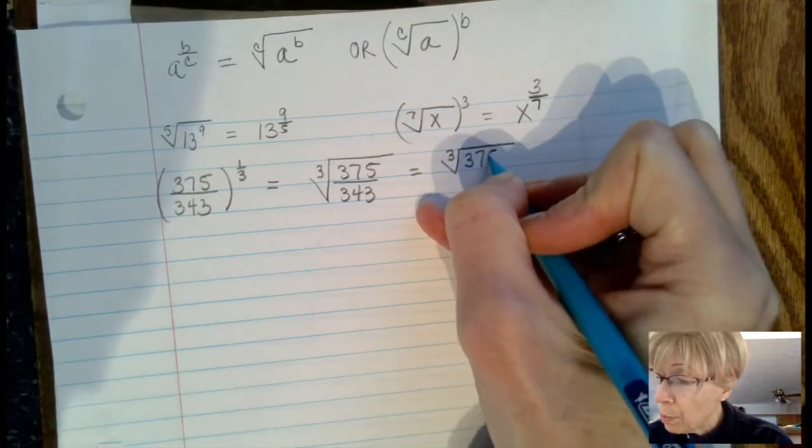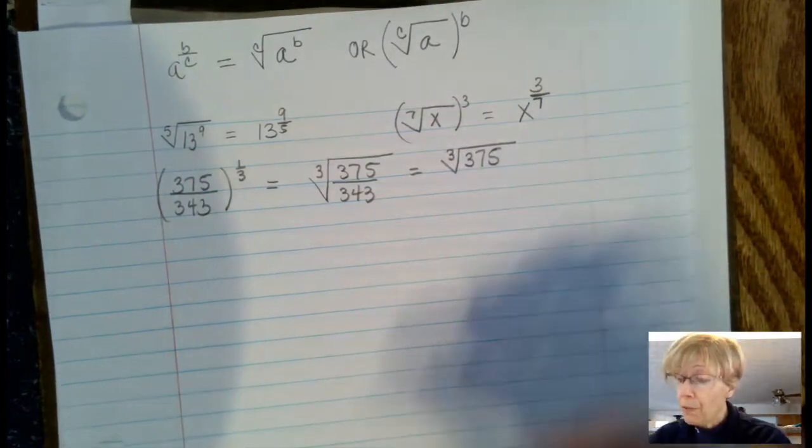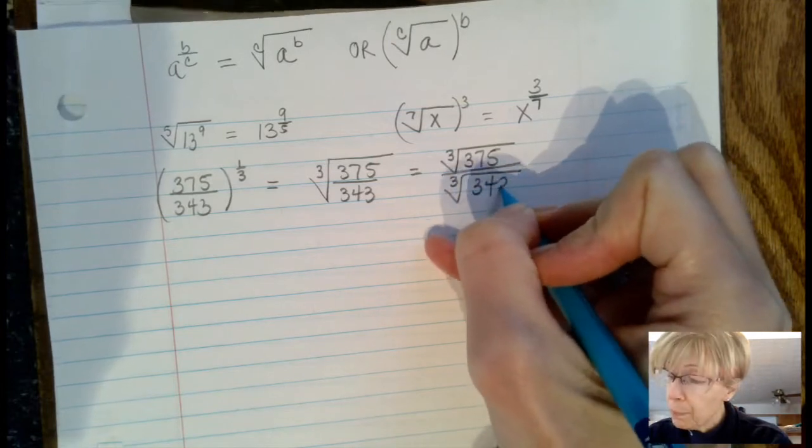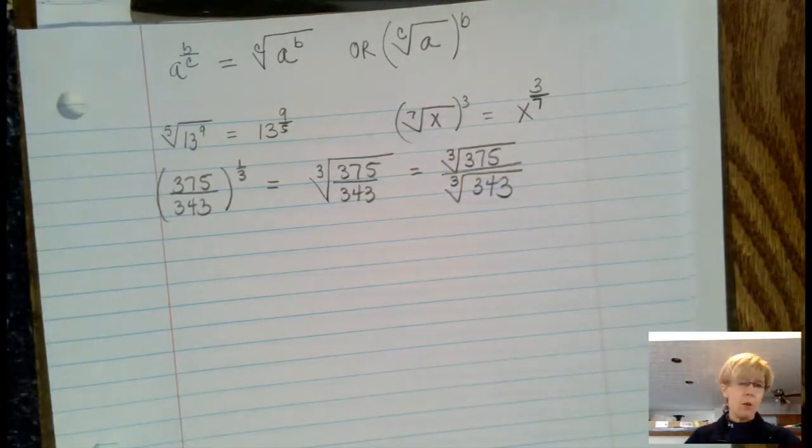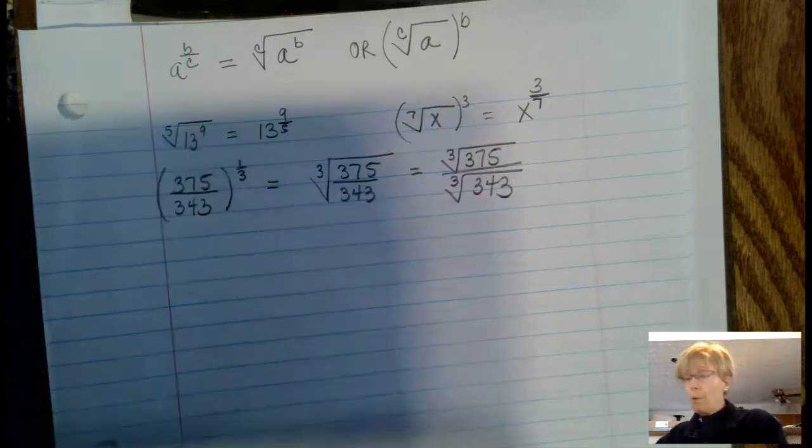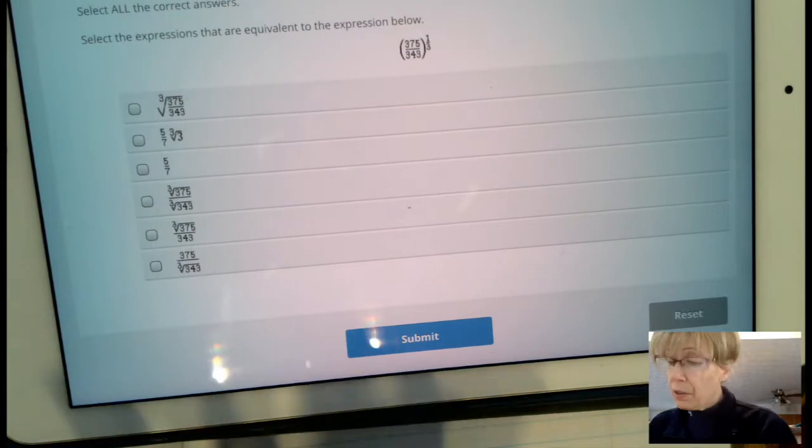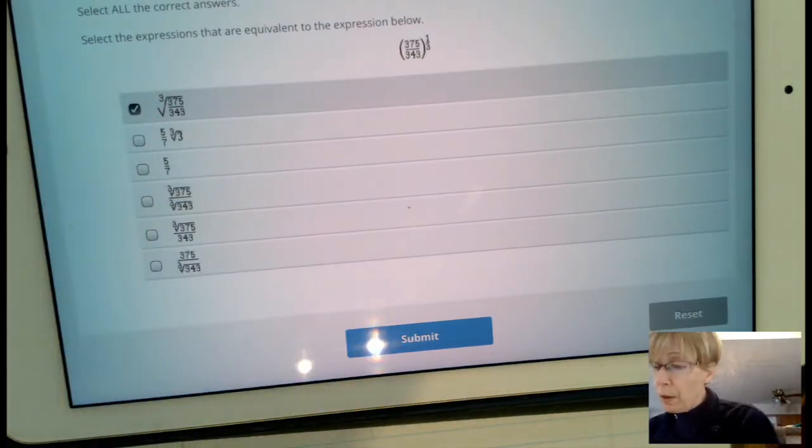What I see is the first one is our first conversion, and then the split apart is down here. Now that we know that, can we simplify this anymore? Because we've got that five-sevenths as the third answer here.